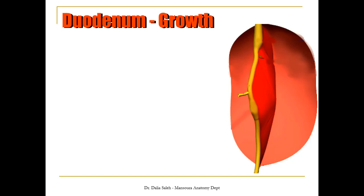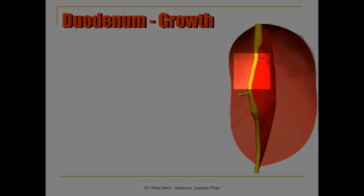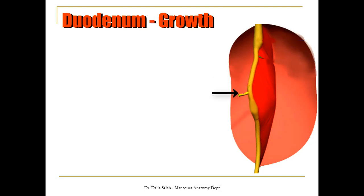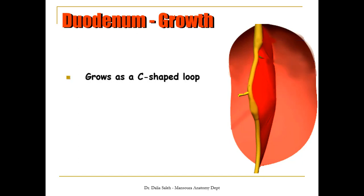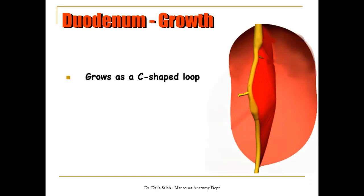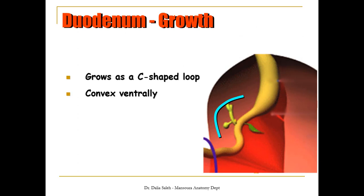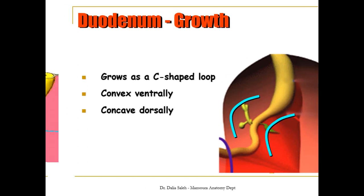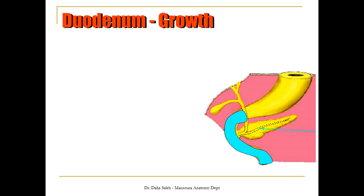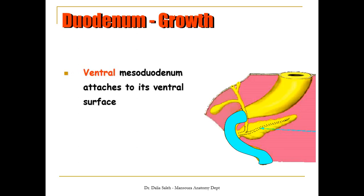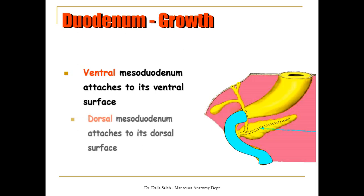Here in this picture, you can see the stomach, the termination of the foregut, the entrance of the bile duct, and the beginning of the midgut. You can also see that the loop of the GIT is suspended to the posterior abdominal wall by the dorsal mesentery. The duodenum grows as a C-shaped loop — convex ventrally and concave dorsally. It is attached ventrally by the ventral mesentery to the anterior abdominal wall, and dorsally by the dorsal mesentery to the posterior abdominal wall.